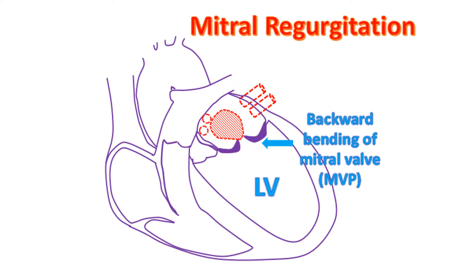Mitral regurgitation can occur as a sequelae of rheumatic fever, a disease which affects the large joints of the body and heart valves. It can also occur secondary to enlargement of the left ventricle in heart failure due to other causes. Another cause is mitral valve prolapse, a condition in which redundant mitral leaflets are bent back into the left atrium when the left ventricle contracts.